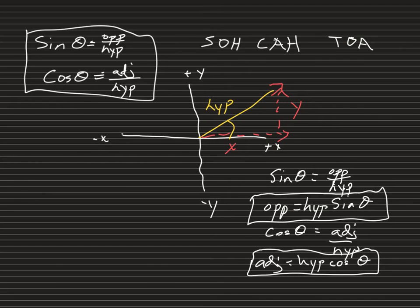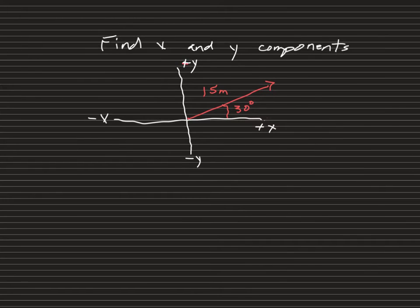Write those equations down — they'll be easier to use than going through the full SOH-CAH-TOA each time, and you can use them on quizzes and tests. Our first problem: find the x and y components for a vector that is 15 meters pointed in a northwest direction at 30 degrees. We want to sketch it first, then identify the x and y components.